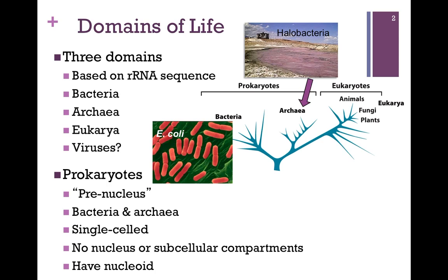Bacteria, like the rod-shaped E. coli in the electron micrograph on the left of the figure, as well as the archaea known as the pink halobacteria pictured in the salt flats at the top of our slide, may also be more broadly classified as prokaryotes, meaning pre-nucleus. These are all single-celled and have no nucleus or subcellular compartments.